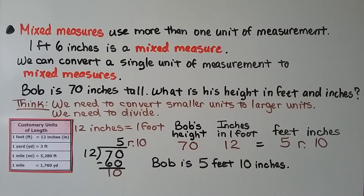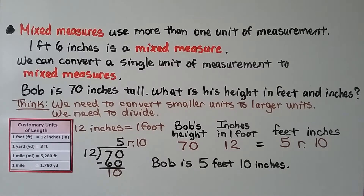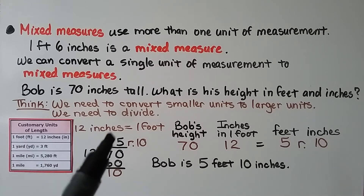Mixed measures use more than one unit of measurement. For example, one foot six inches is a mixed measure using feet and inches. We can convert a single unit to mixed measures. Bob is 70 inches tall — that's one single unit. To find his height in feet and inches, we convert smaller units, inches, to larger units, feet with inches. So we need to divide. There are 12 inches in one foot.